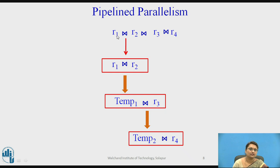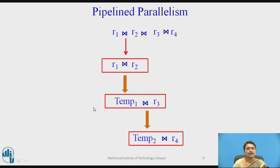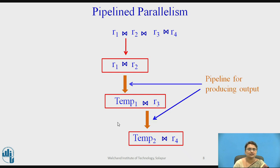Processor P1 does R1 joins with R2. As soon as the results are generated, those are given to processor P2, which performs the join with R3. As the generated data is ready, it is consumed by processor P3, which does the join of temp2 with R4. Processors P1, P2, and P3 are working in parallel — somebody is producing and somebody is consuming in a pipeline. This is pipeline parallelism.